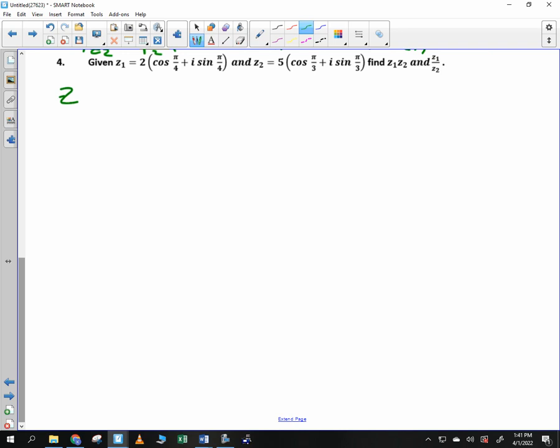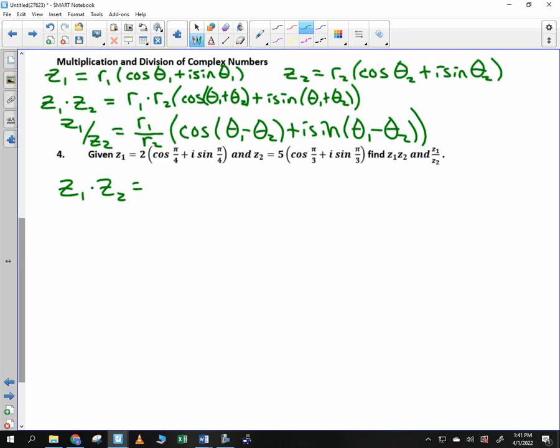So here we go. Let's multiply these two together. Z sub one times Z sub two. Notice that Z sub one is 2 times the cosine of pi over 4 plus i sine of pi over 4. And Z sub two is 5 times the cosine of pi over 3 plus i sine of pi over 3. All we want to do is we want to multiply those together and we want to divide them. So who can tell me where to start? The r's. What do I do with them?